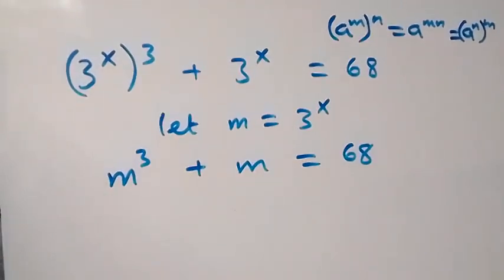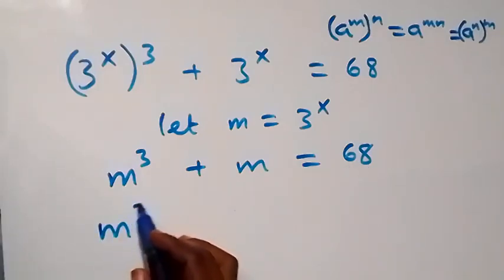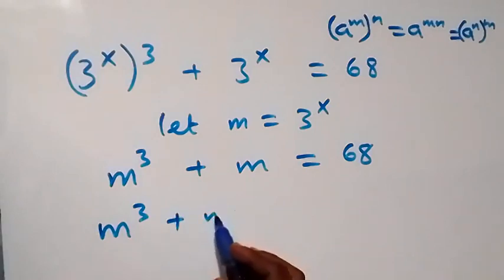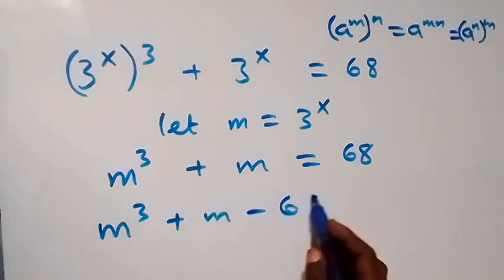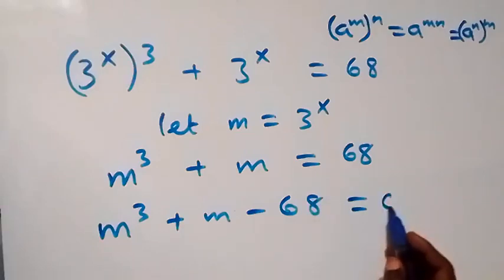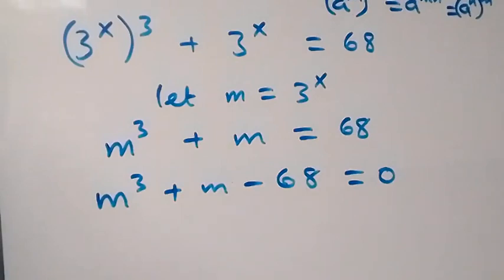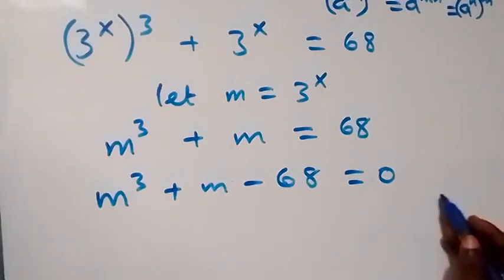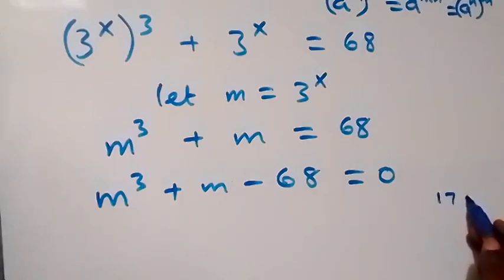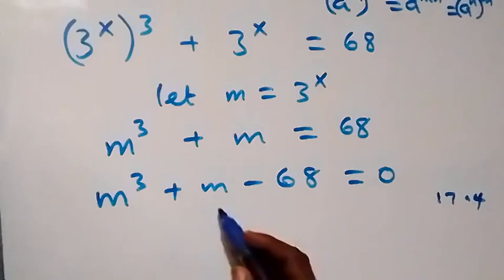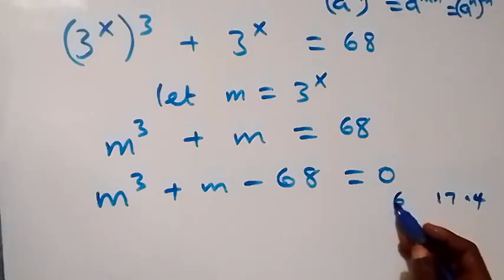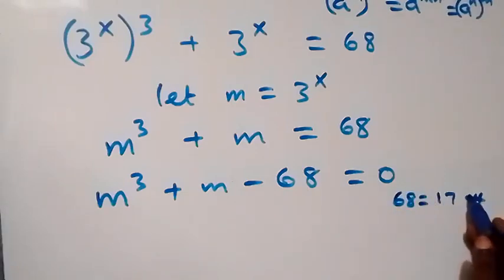Taking 68 to this side, we have m cubed plus m minus 68 equals zero. From here, 68 can be written as 17 times 4.